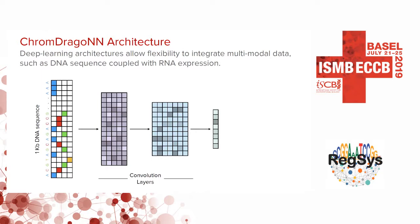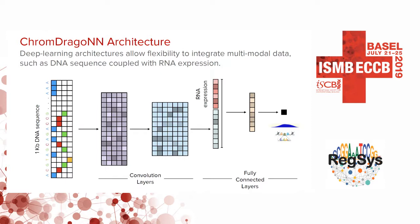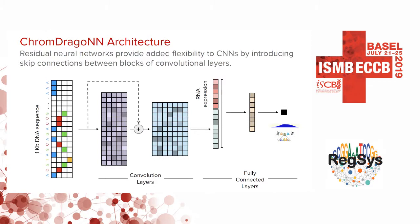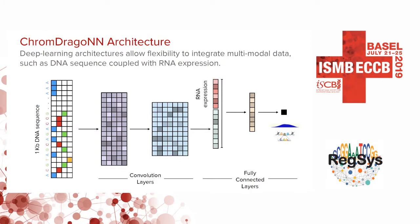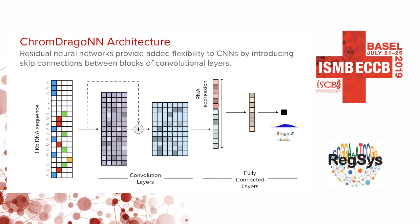To integrate RNA expression data, we append the RNA expression vector to the sequence representation, then pass this concatenated input through fully connected layers, yielding a single scalar representing the probability of the sequence being accessible in that cell type. In practice we use over 15 convolution layers, and to mitigate training inefficiency in such deep networks, we introduce skip connections known as residual neural networks.